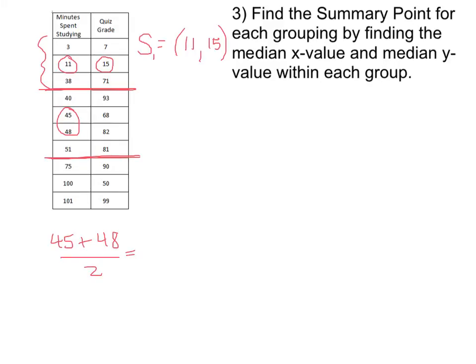Down here I'll go 45 plus 48 divided by 2, and I'm going to get 46.5. So for my summary point in region 2, I now know my x-coordinate is going to be 46.5.